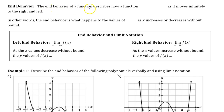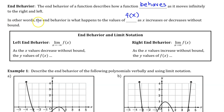The end behavior of a function describes how a function behaves as it moves infinitely to the right and left. In other words, the end behavior is what happens to the values of f of x as x increases or decreases without bound.